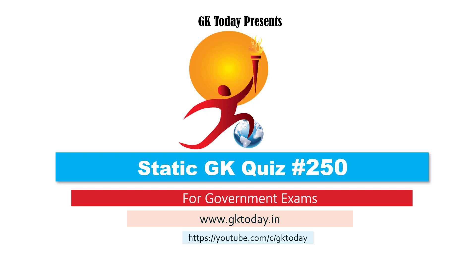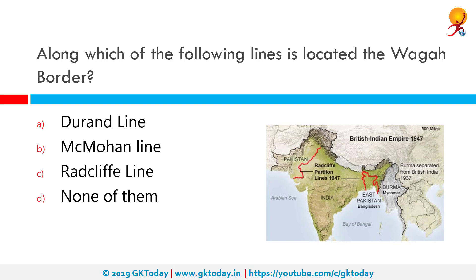Along which of the following lines is the Wagah border located? The correct answer is the Radcliffe Line. The Radcliffe Line became the international border between India and Pakistan, which also includes present-day Bangladesh, during the partition of India. The line divided Bengal into Indian-held West Bengal and East Bengal, which became East Pakistan in 1956.